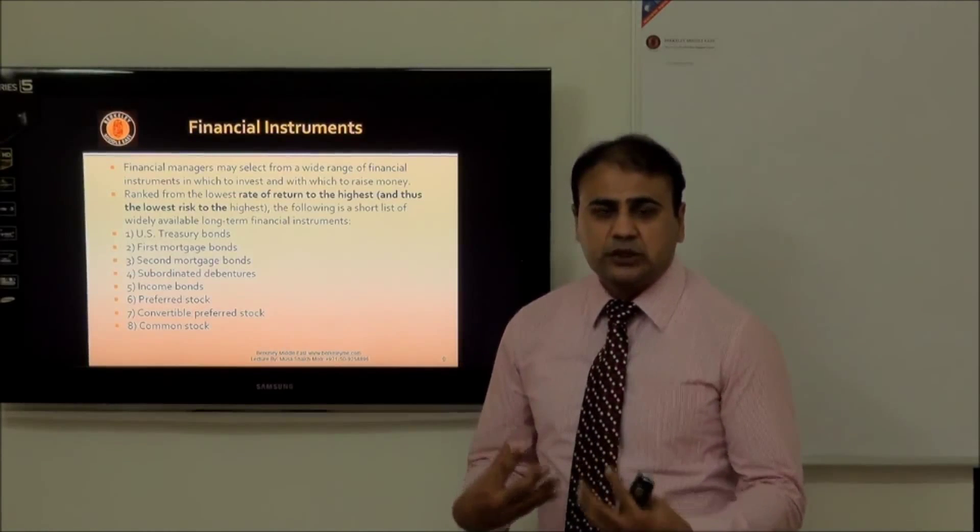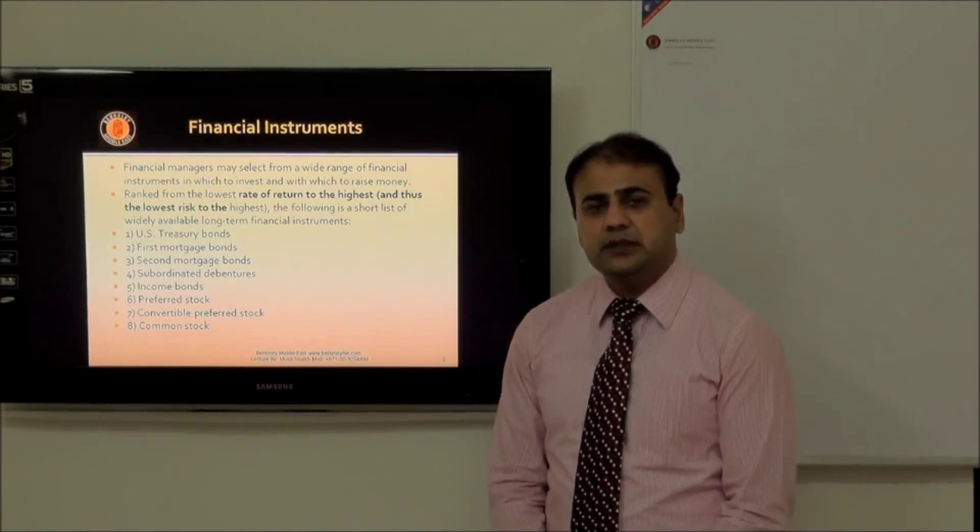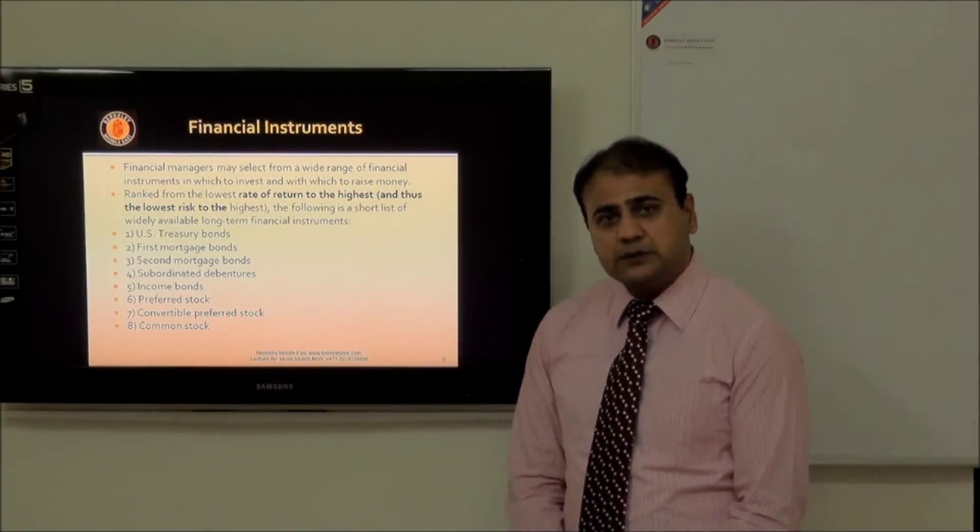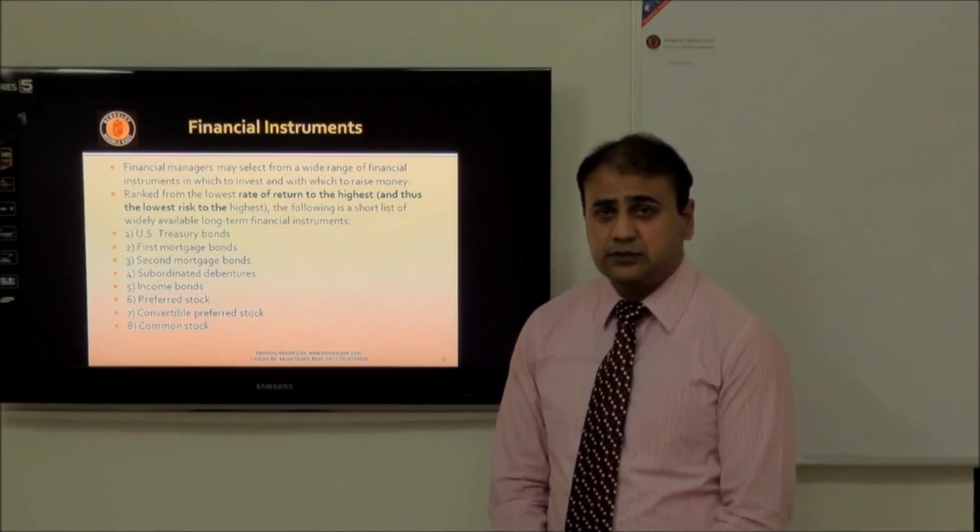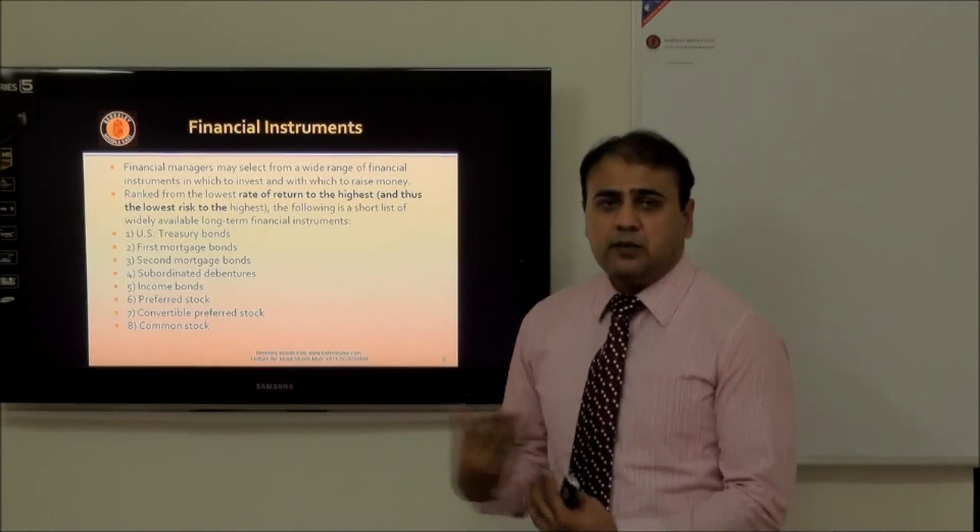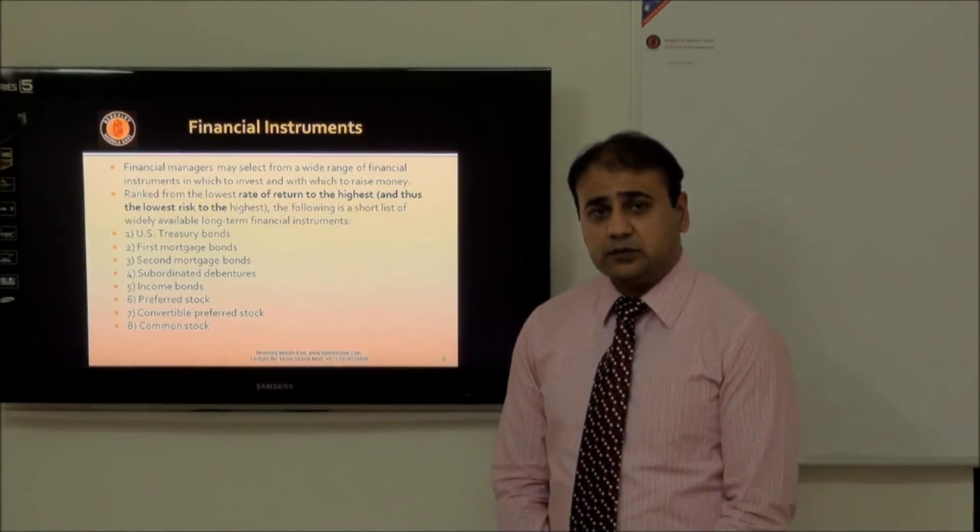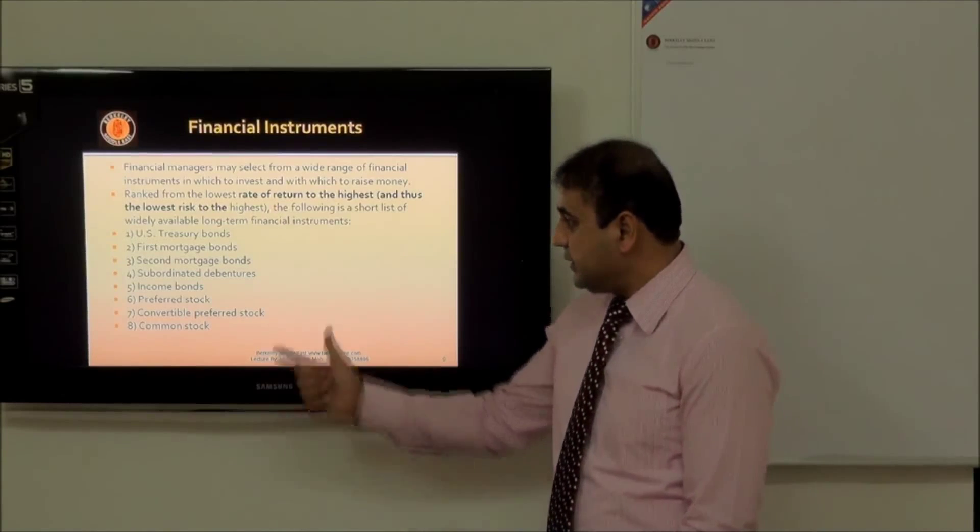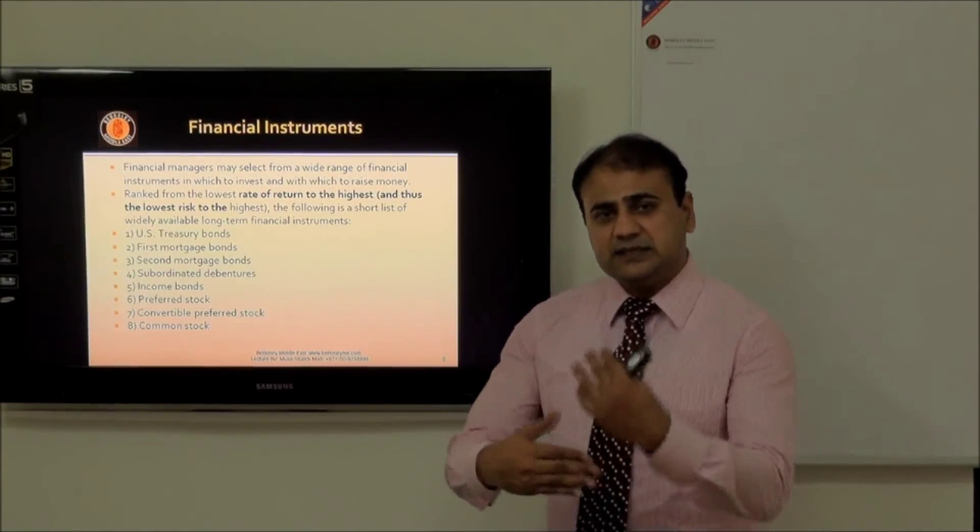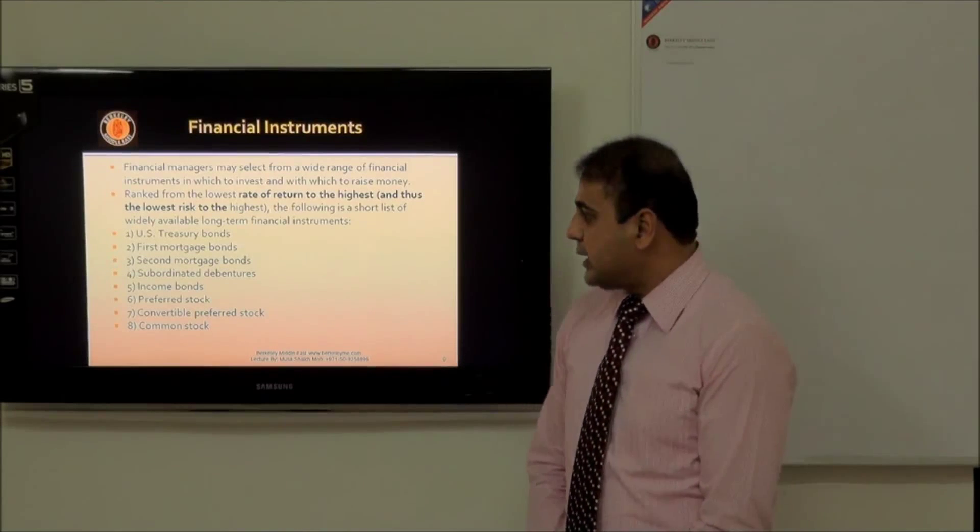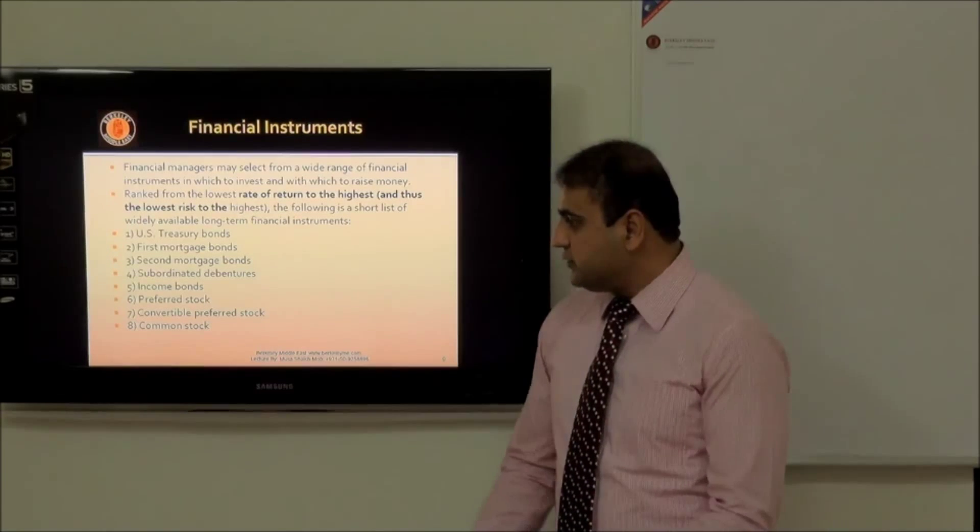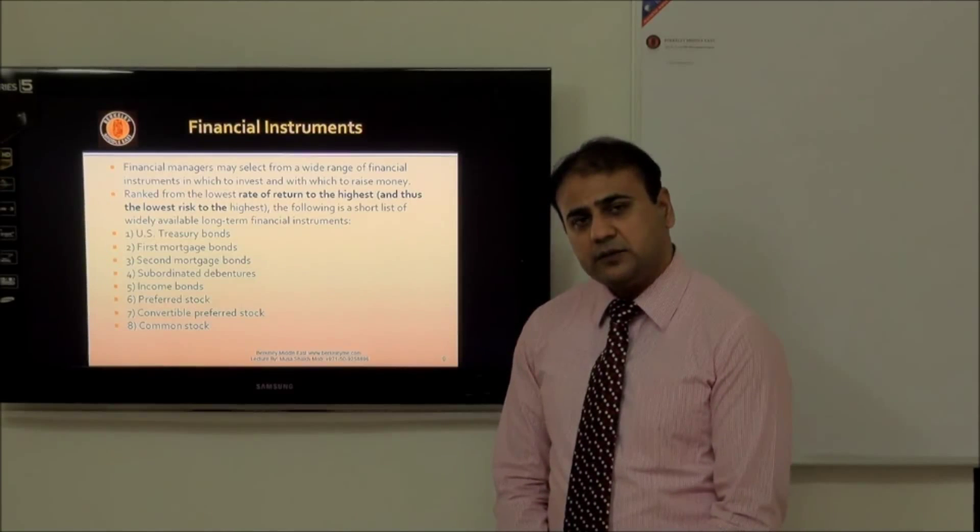In order to make your short-term profits you want to invest in the money market. What are the options you have? U.S. Treasury bonds which are issued by the U.S. government are most secured because they're assured by the government itself. Then first mortgage bonds - these are issued when there is some collateral, so this is again the most secured form of investment. Then we have second mortgage, which is less secured than the first mortgage. And then we have subordinated debentures, income bonds, preferred bonds, junk bonds, convertible preference stock, and the common stock itself.